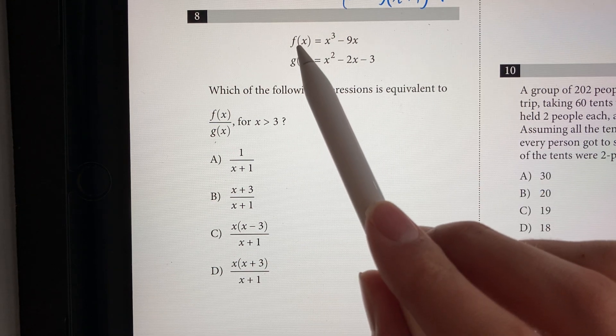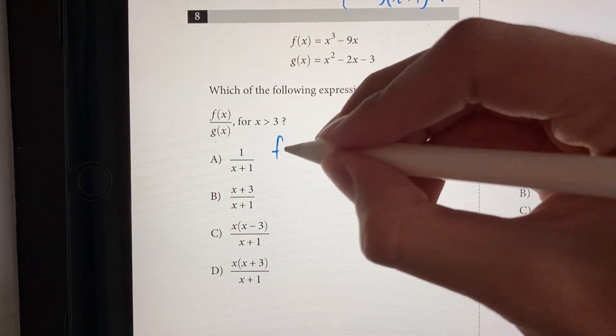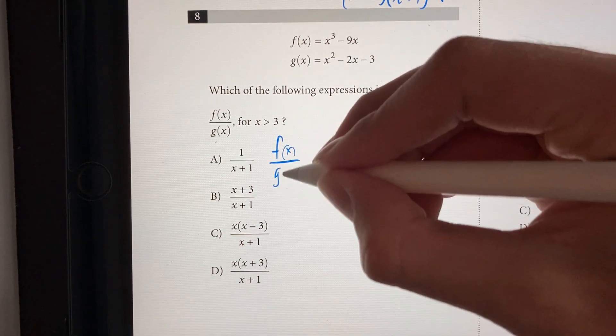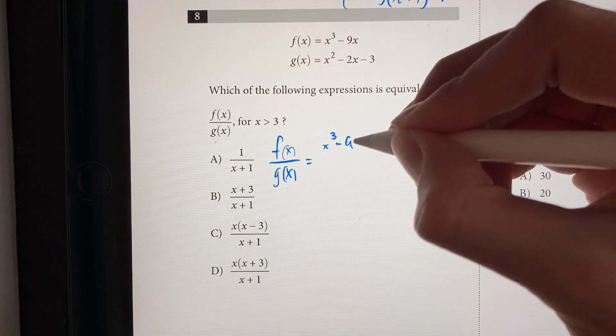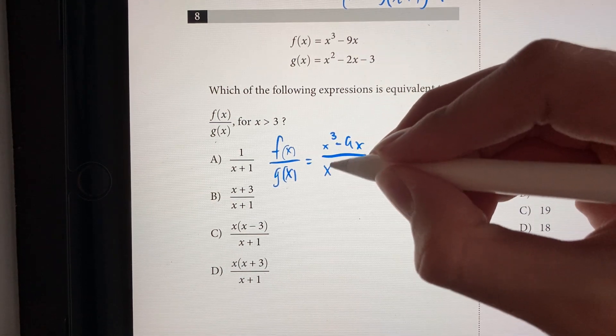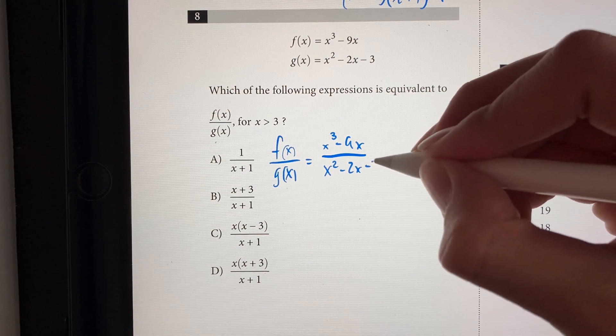The first thing I'm going to do is just divide f of x by g of x. So you get f of x over g of x is equal to x to the third minus 9x divided by g of x, which is x squared minus 2x minus 3.